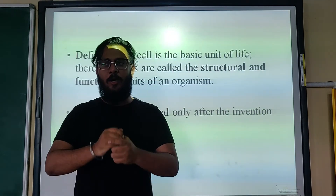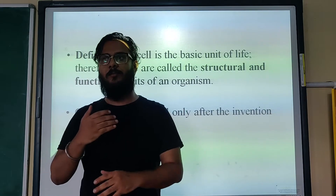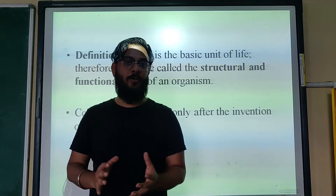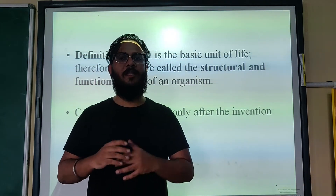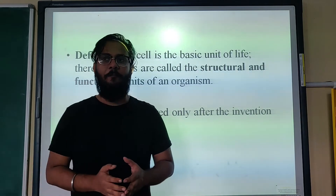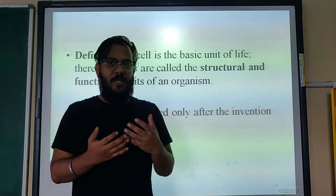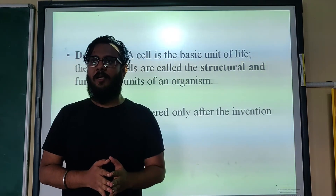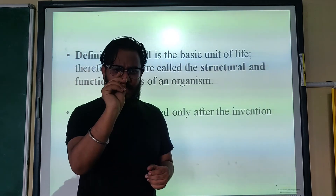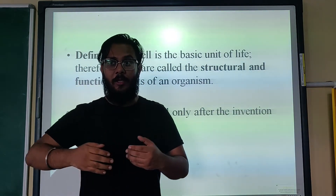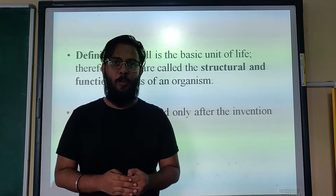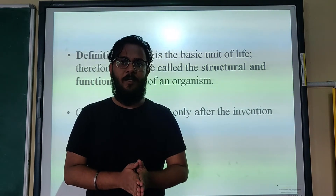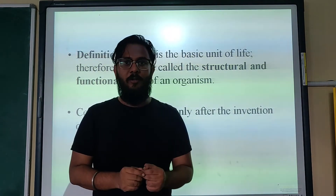When were cells discovered? We know that cells are small particles which come together to form tissues, and tissues come together to form organs. But we only came to know about cells after the microscope was invented, because cells are very tiny and cannot be seen with the naked eye. After the microscope was invented, people found out there were smaller units, and they called them cells.